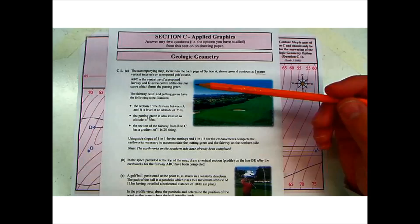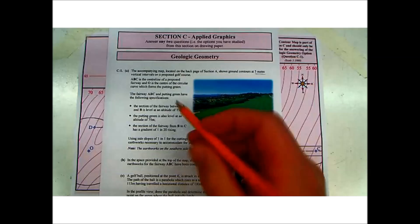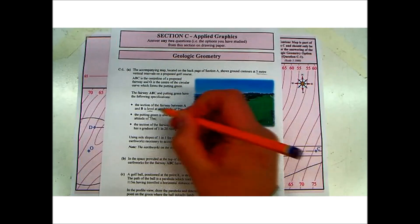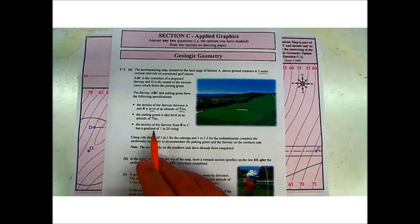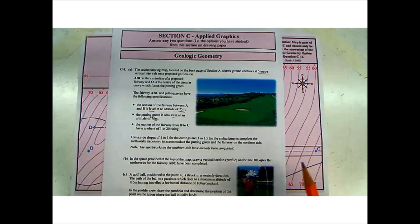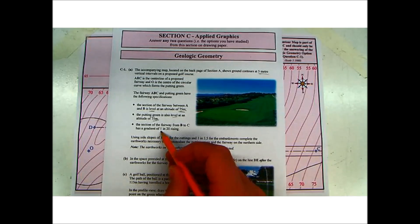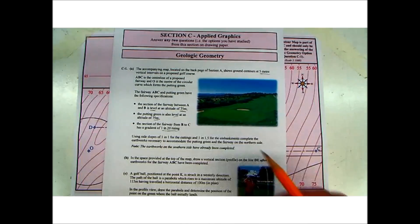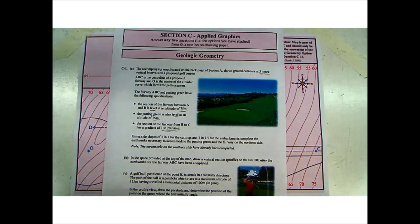The fairway ABC and putting green have the following specifications. The section of the fairway between A and B is level at an altitude of 75 meters. The putting green is also level at an altitude of 75 meters. The section of the fairway from B to C has a gradient of 1 to 20 rising. Using side slopes of 1 to 1 for cuttings and 1 to 1.5 for embankments, complete the earthworks necessary to accommodate the putting green and the fairway on the northern side.